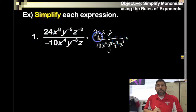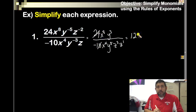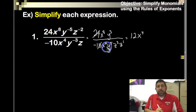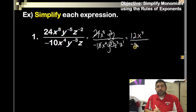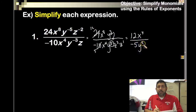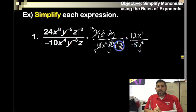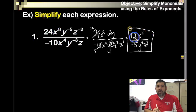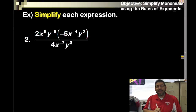Now simplify the numbers: 2 goes into both 24 and 10, giving 12 over 5. x^8 minus x^4 — since 8 is bigger, it stays on top: x^4. y: 5 minus 3 gives y^2 on the denominator. The z's are both on the bottom: z^2 and z^1 add together to give z^3. So our answer is (12x^4) / (5y^2 · z^3).